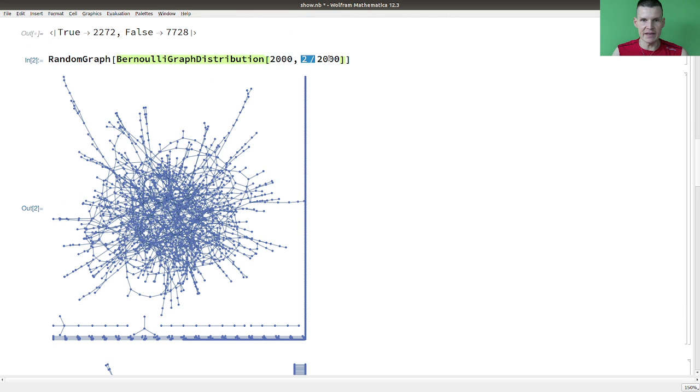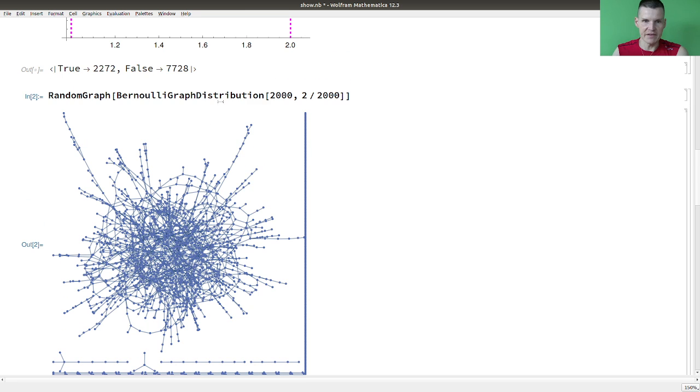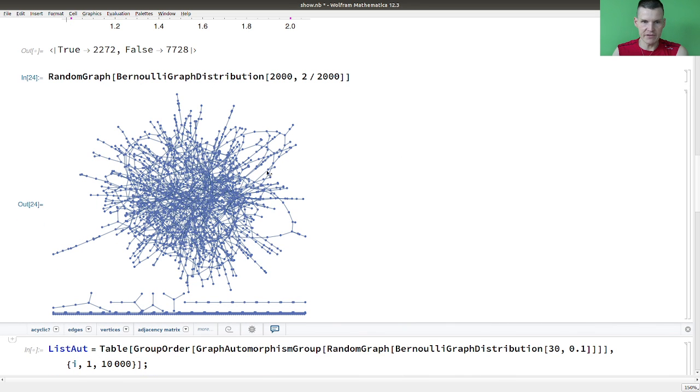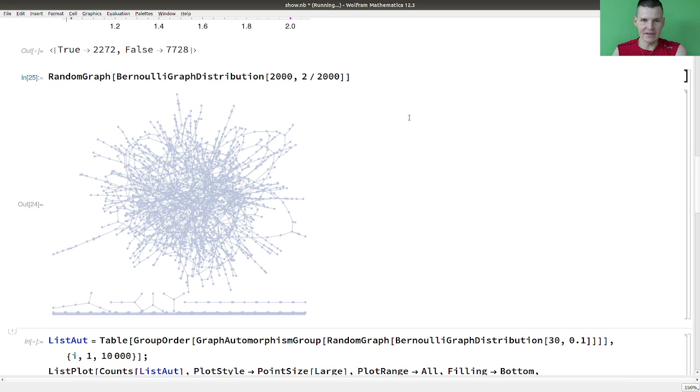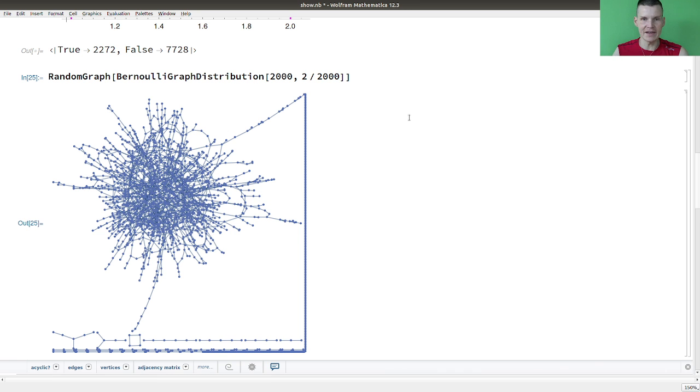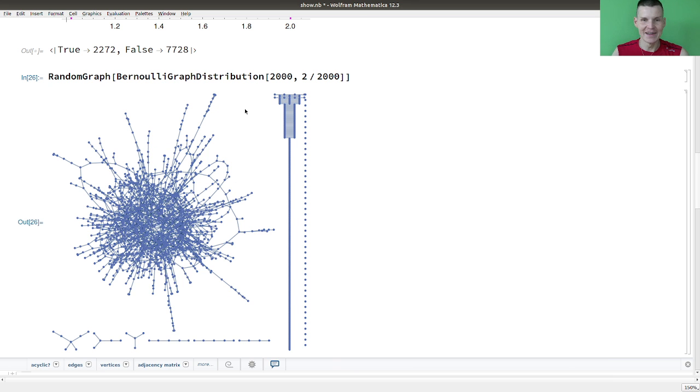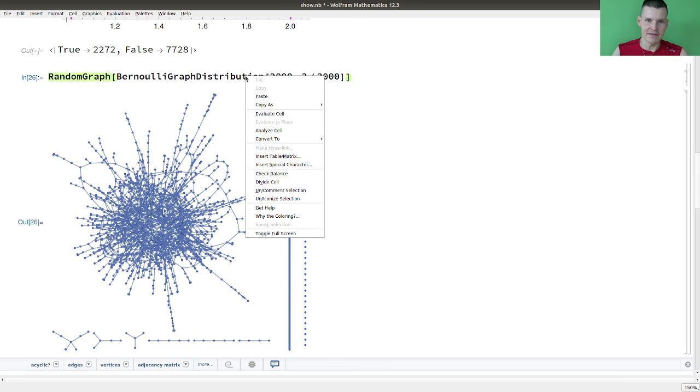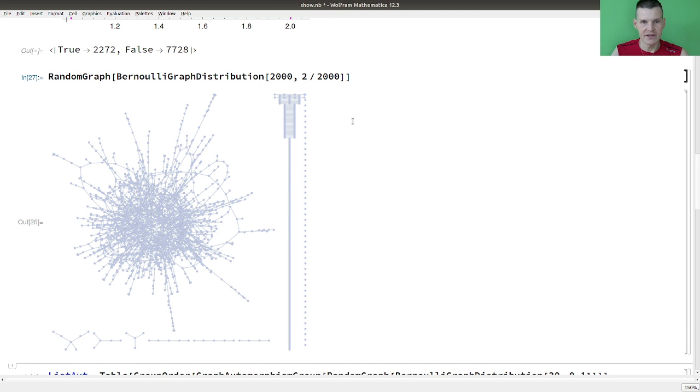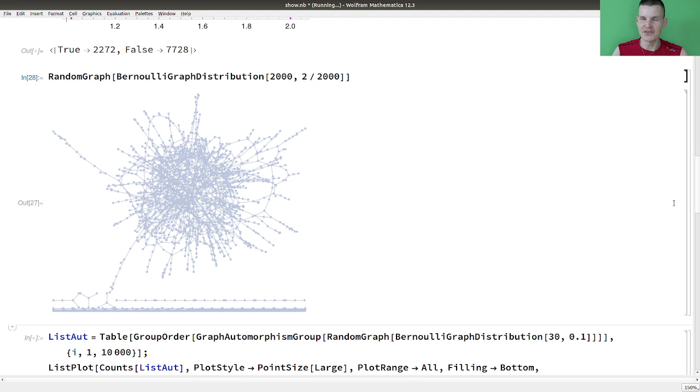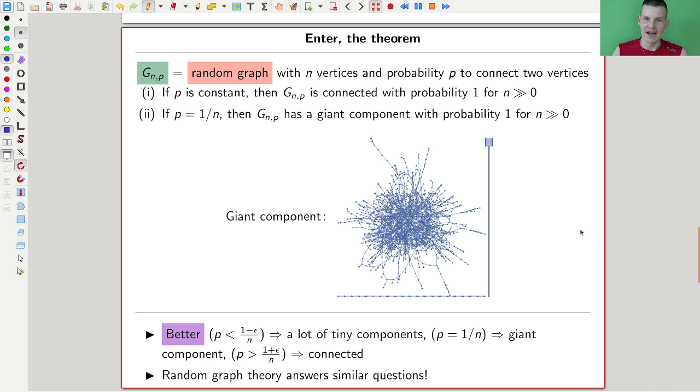So here, Bernoulli distribution again, 2000 vertices. I take this ratio, two over N, to make it a bit nicer to see. And I just run it. You could clearly see the giant component and then a lot of tiny unconnected components. This is again a theorem you can prove. I can run that again. You see the giant component. And I run that again. You see the giant component and a lot of little things. One more run because it's so much fun. You'll see a giant component and a lot of little graphs.